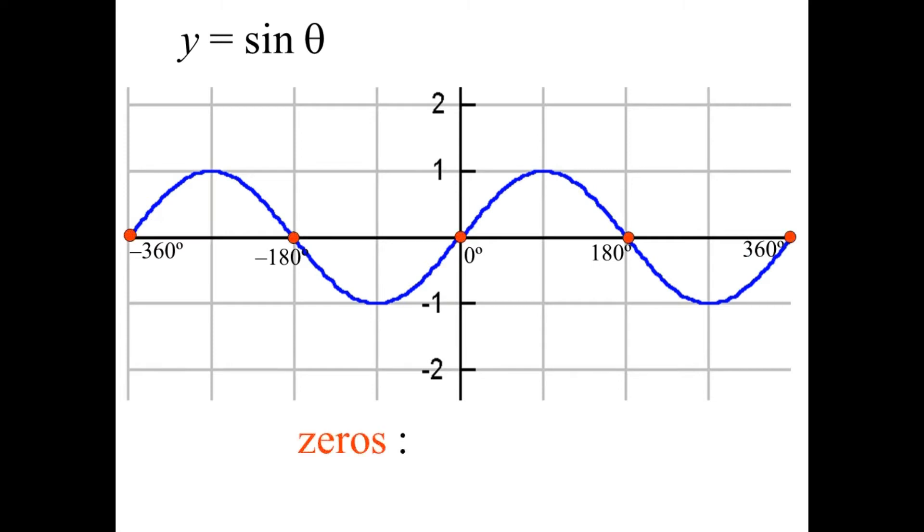The zeros are these red dots. The sine of zero is zero. The sine of 180 is zero. The sine of 360 is zero. All the multiples of 180 degrees. The sine of the multiples of 180 degrees are zero.